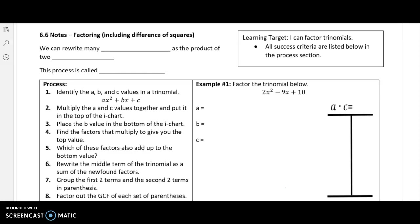We can rewrite many trinomials as the product of two binomials. A trinomial, remember tri means three, so it's a three termed expression. Binomials would mean a two termed expression. So I'm basically taking a trinomial, like the one seen below in example one, and rewriting it as the product or multiplication of two binomials within parentheses. And as I said before, this is called factoring.